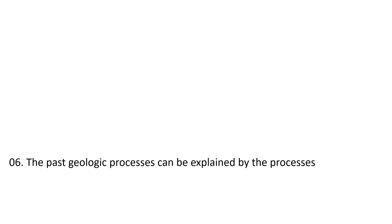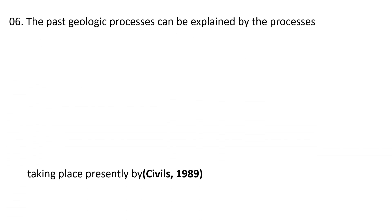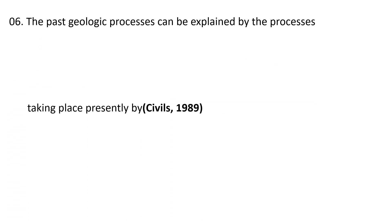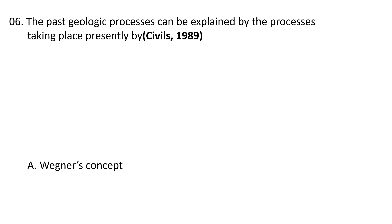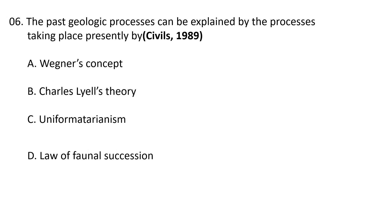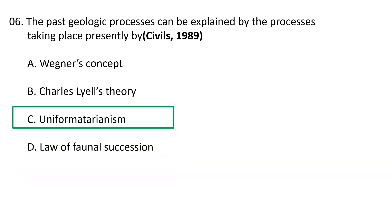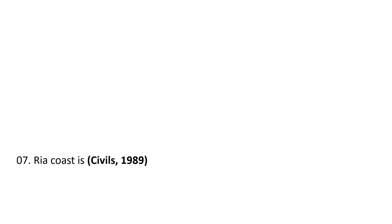Next question: The past geological processes can be explained by the processes taking place presently by — A) Wegener's concept, B) Charles Lyell's theory, C) uniformitarianism, and D) law of faunal succession. According to the law of uniformitarianism, the present is the key to the past, so C is the correct answer.